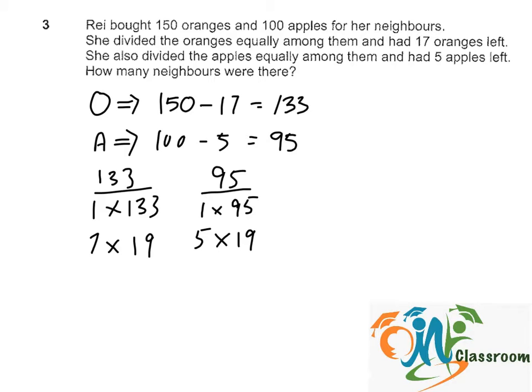So as we can see, there are two common factors: 1 and 19. So since there is more than one neighbor, the answer must be 19. So there are all together 19 neighbors.